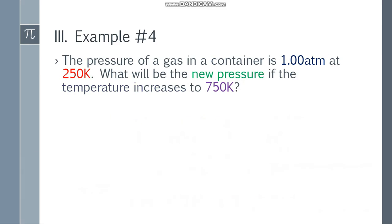Let's go to example number 4. The pressure of a gas in a container is 1 atm at 250 Kelvin. What will be the new pressure if the temperature increases to 750 Kelvin? You can do mental math here.